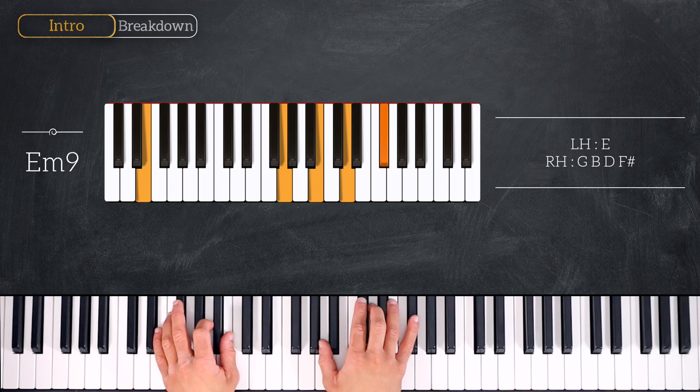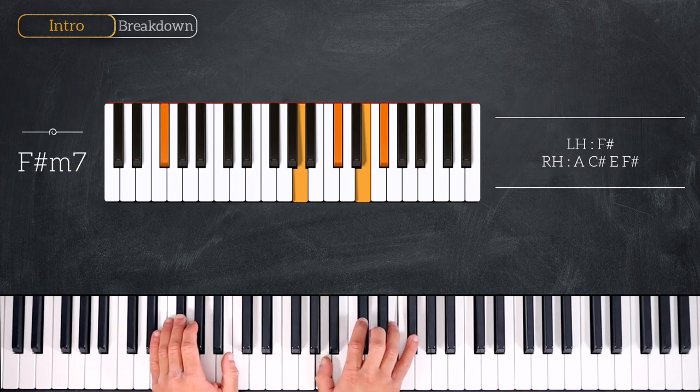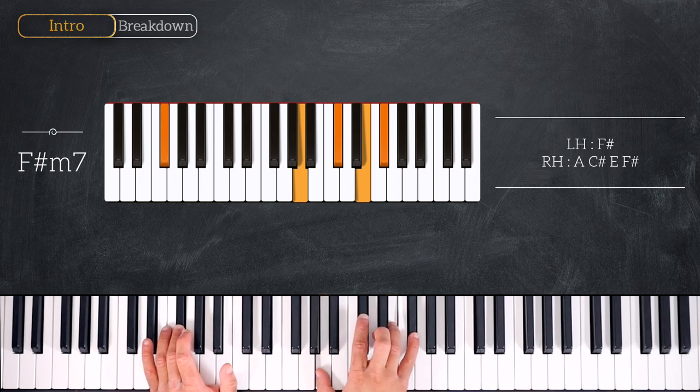Next, we'll play an F sharp minor 7 chord. This time we play F sharp on the left hand and A, C sharp, E, F sharp on the right.